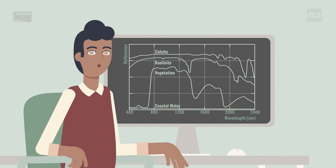Based on your research question, you have already selected suitable imaging spectroscopy data and pre-processed them if necessary. That included radiometric and geometric correction, as well as adjustments for atmospheric scattering and absorption effects to finally obtain surface reflectance data.